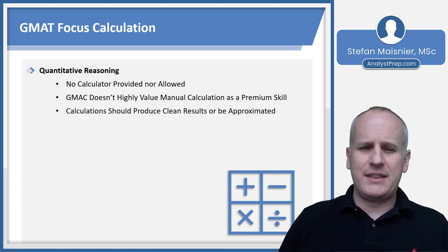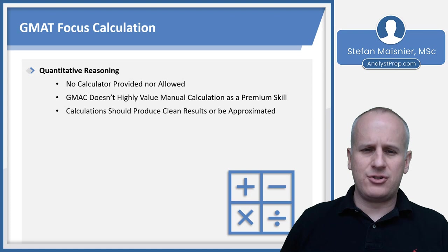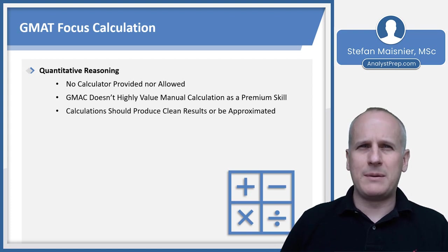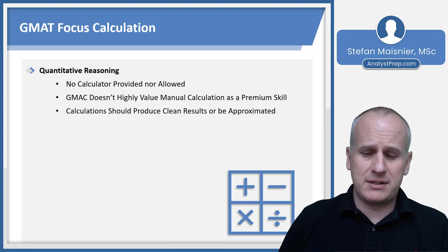That said, the calculations in the quantitative reasoning should produce relatively clean results or be approximated or track directly to some answer choices. They won't ask you arbitrarily to divide 7,333,412 by 86 and expect some really crazy non-integer result. They're just going to ask you to be able to do the basics that a skilled person who's able to use arithmetic will be able to execute in a business setting.